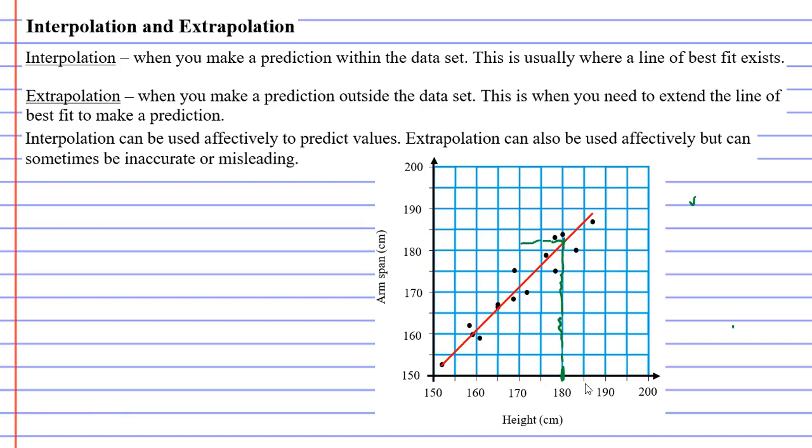and then to the left, and we would predict, this is just a prediction, that they would have an arm span of about 182 centimeters. So usually when we go within the data set, this is where the line of best fit exists. Usually, it's within the data set.